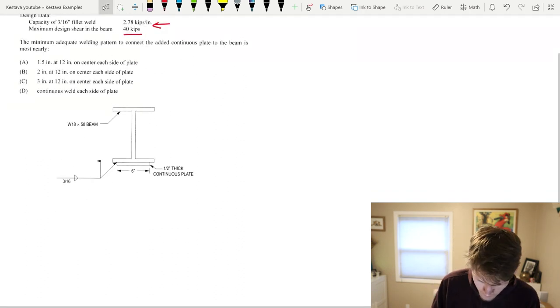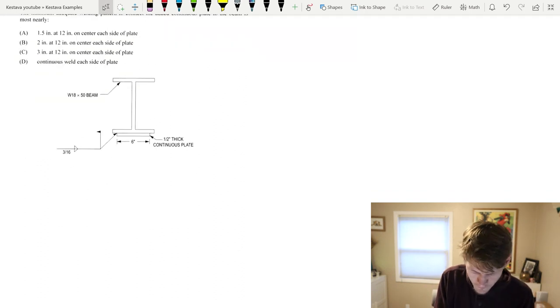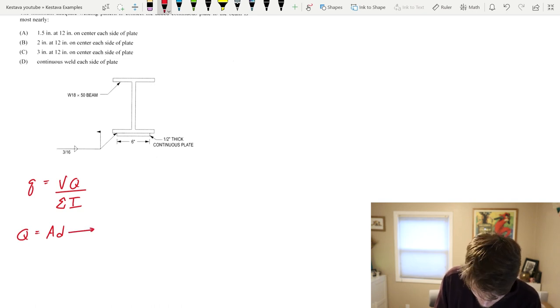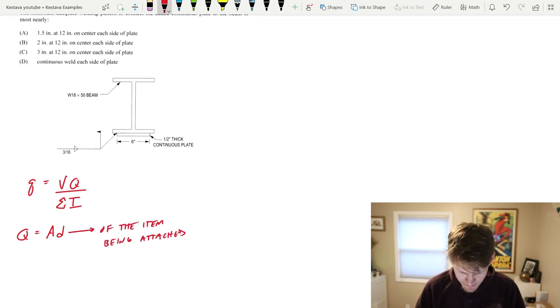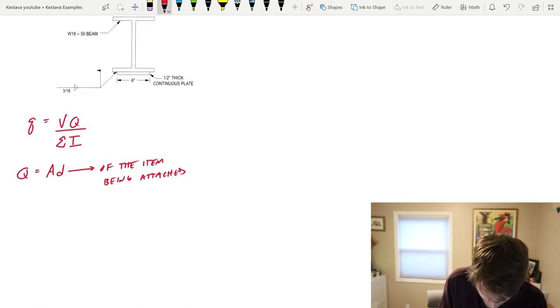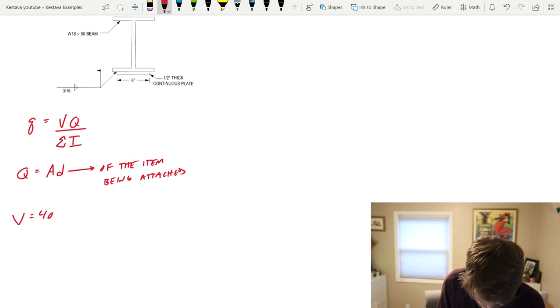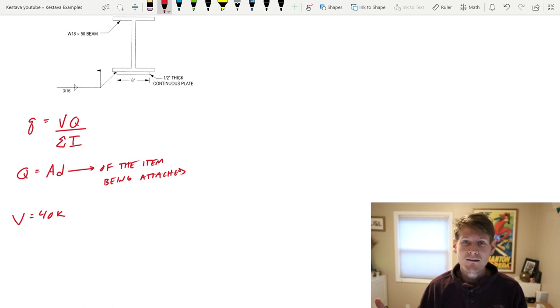All right, well first of all shear flow is the following equation: VQ over summation I, and Q is equal to AD. V was that shear demand on the beam which was already given, so that was 40 kips. We already have one thing solved, just two more things.